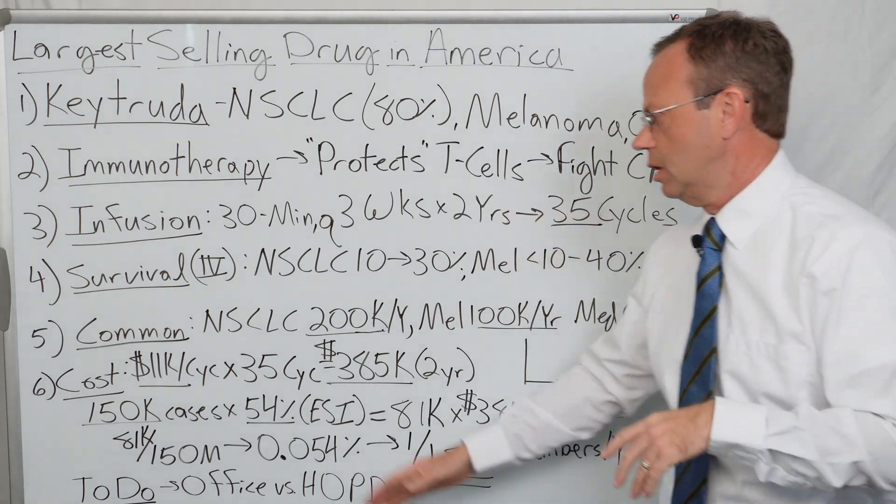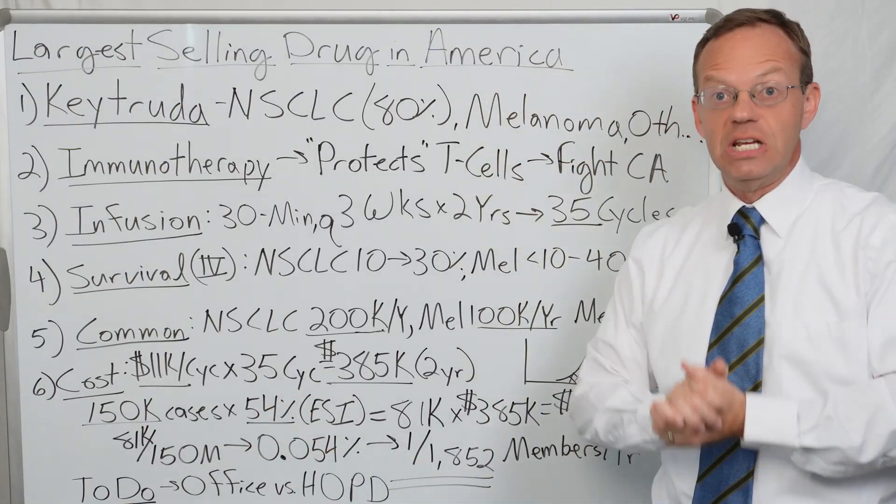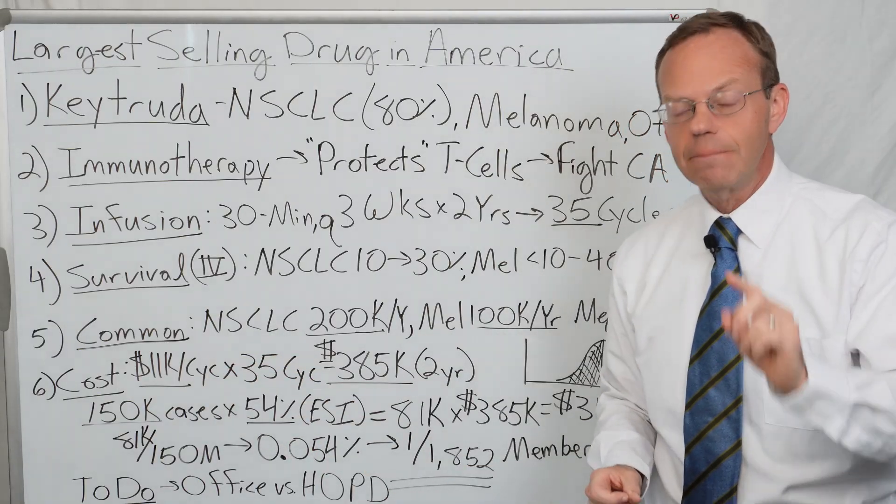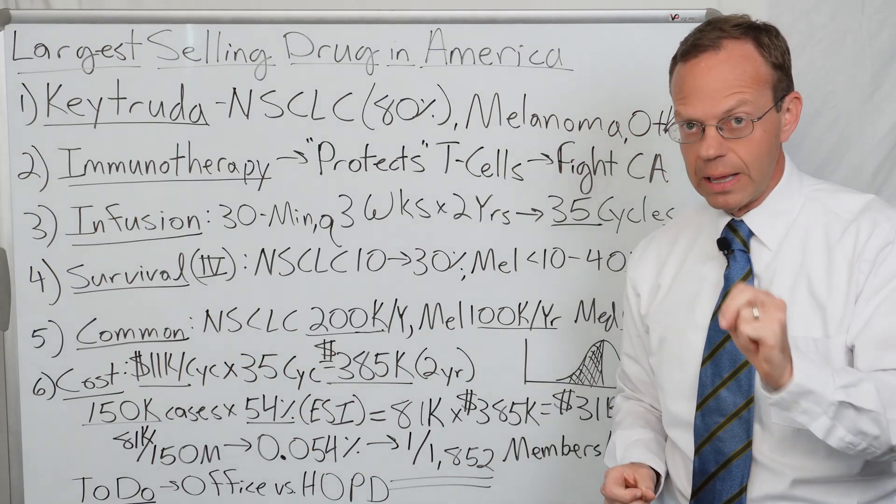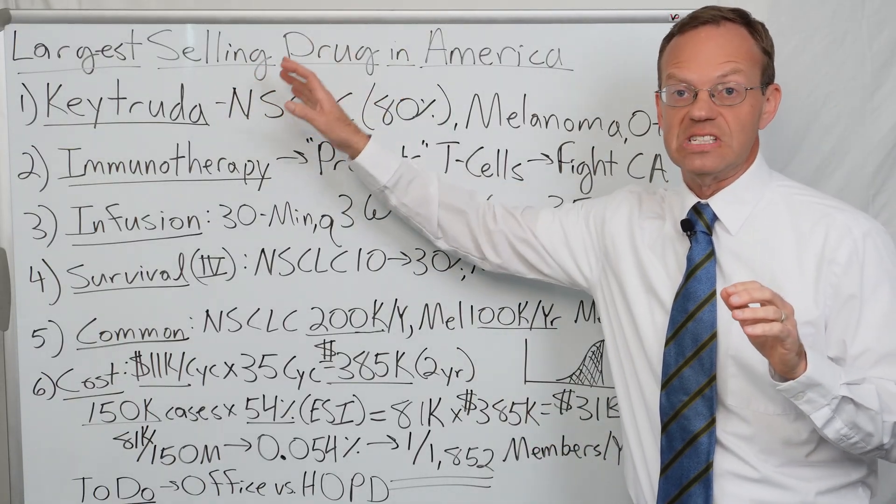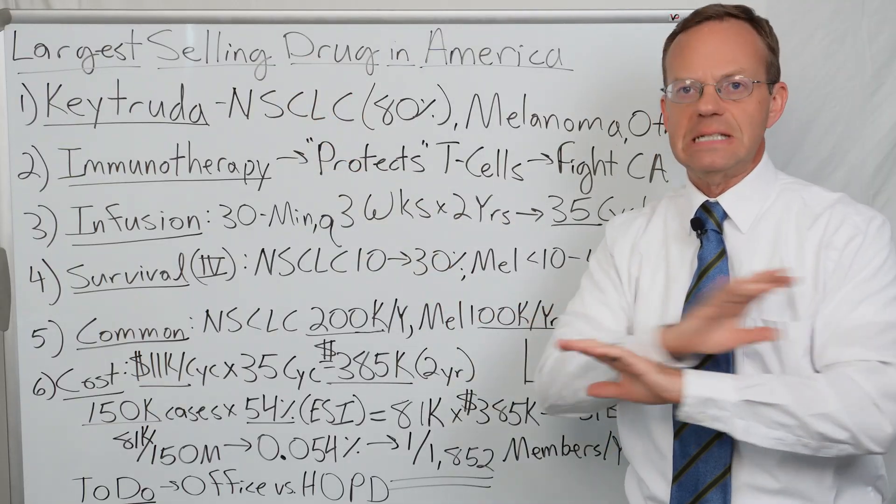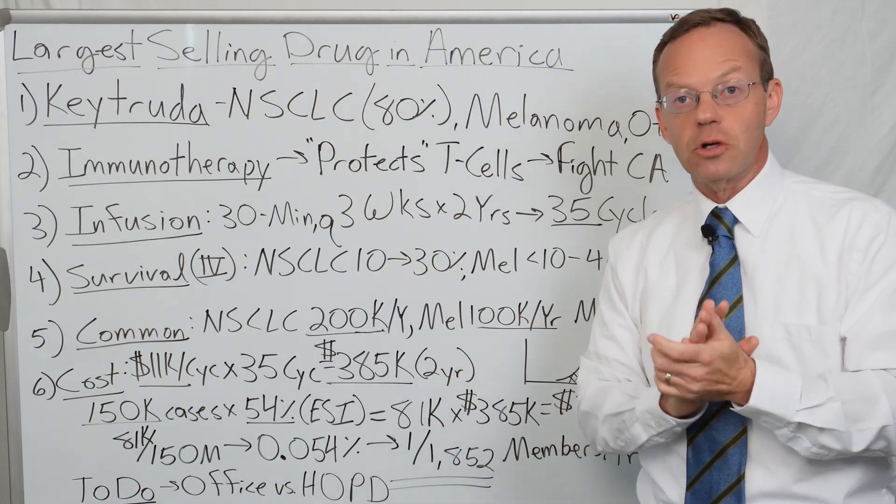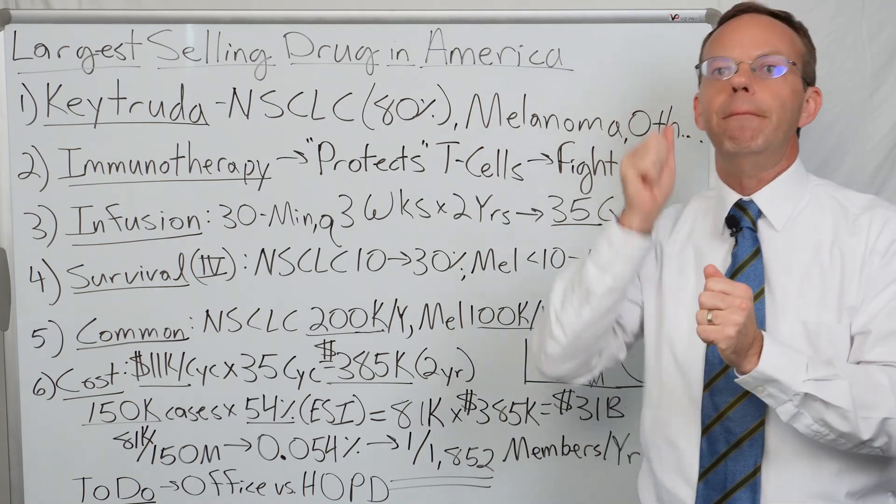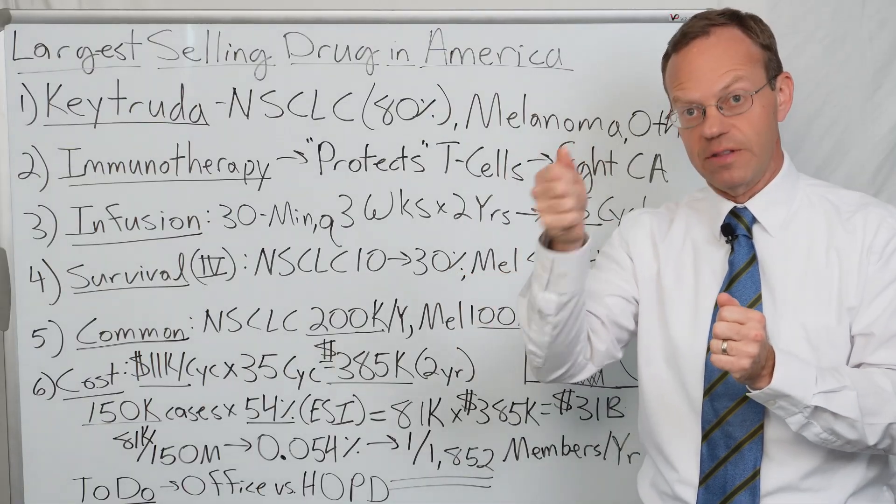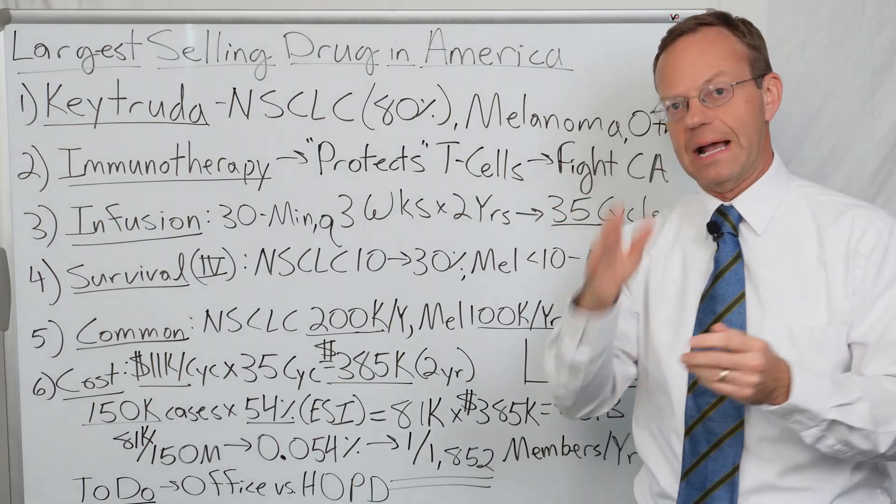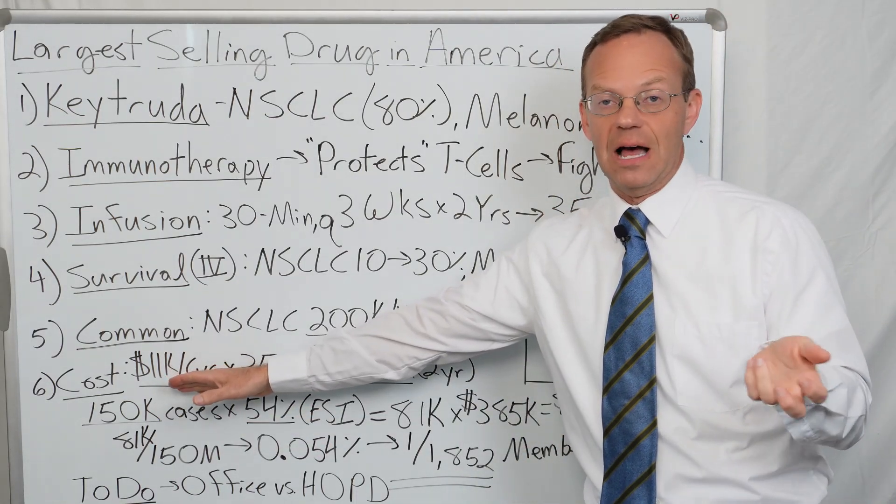That begs the question around cost. As you can imagine, it's expensive. It's about $11,000 per cycle per dose. Keytruda is billed through the medical plan, not your pharmacy spend from your PBM. The physician practice or hospital is buying the Keytruda and billing your plan for it. The pricing is not transparent.